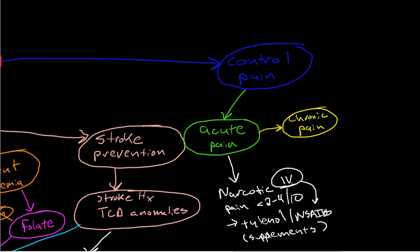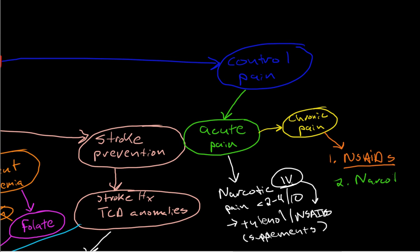Controlling chronic pain is very important if it begins. The mainstay for controlling chronic pain is the use of NSAIDs as step one. If NSAIDs are not enough, then consider adding long-acting narcotics, both long-acting and short-acting for breakthrough pain.